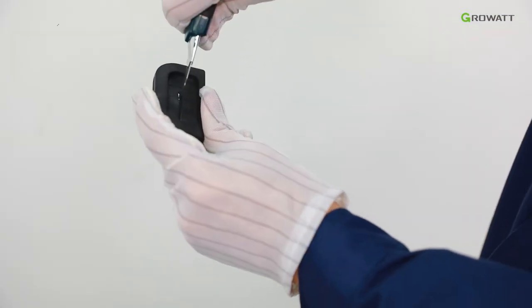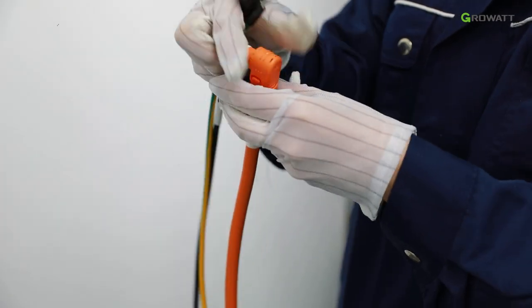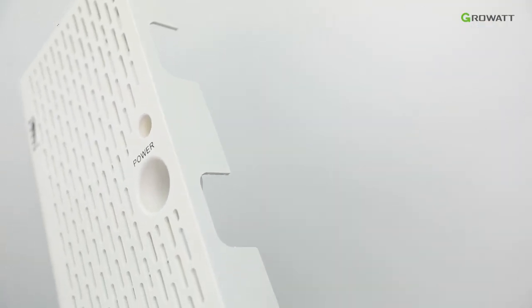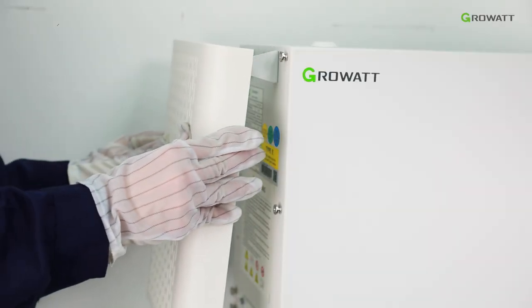Cut the waterproof cover open, pass through the corresponding cables in turn, and then snap the waterproof cover into the trim cover. Install the trim cover.